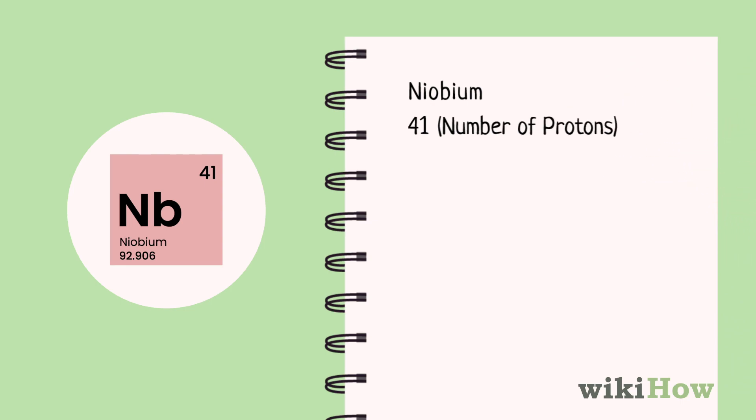This number represents the number of protons in the atom. For instance, the atomic number of niobium, Nb, is 41, meaning that a niobium atom has 41 protons.